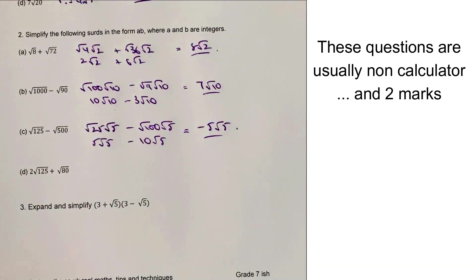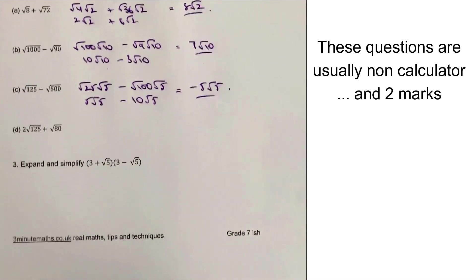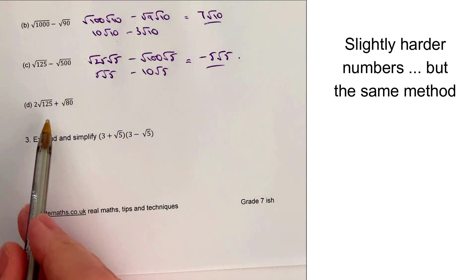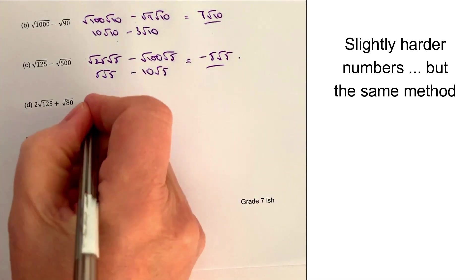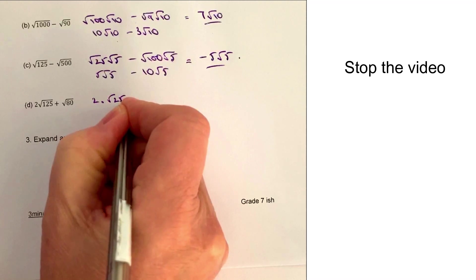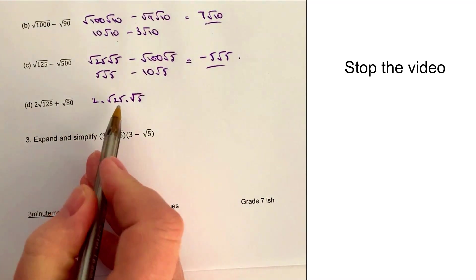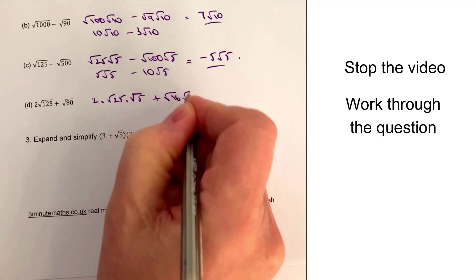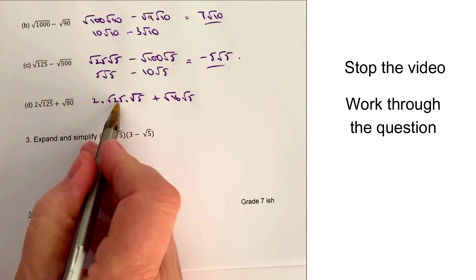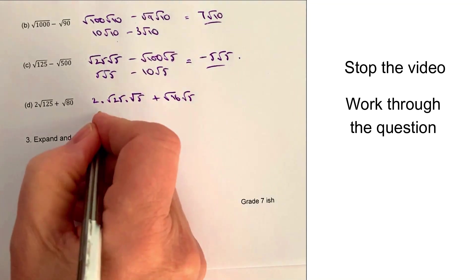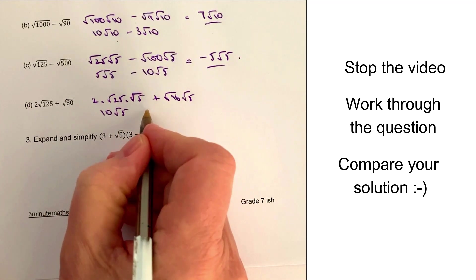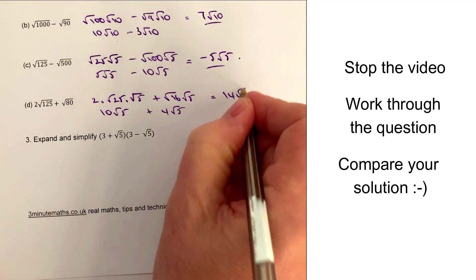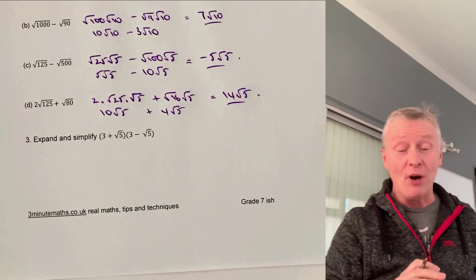For part D, the final part of question 2, we've got 2 times root 125. That's the same as 2 times root 25 times root 5. Plus root 80, which is root 16 times root 5. So 2 times the square root of 25, which is 5, gives 2 times 5 equals 10, so that's 10 root 5. And then root 16 is 4, giving 4 root 5. Adding those together: 10 root 5 plus 4 root 5 equals 14 root 5.